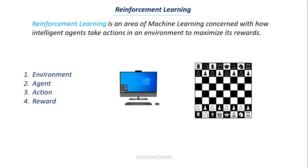For example, we want to make a computer program that can play chess like a human. The chessboard becomes the environment and the computer is the agent. The actions represent the moves the computer takes. The ultimate reward is winning the chess game — for each step closer to winning it gets a positive reward, and for a bad move it gets a negative reward. This is how the machine learns to play the game. Applications include game-playing AI systems and autonomous systems like self-driving cars and automatic drones.